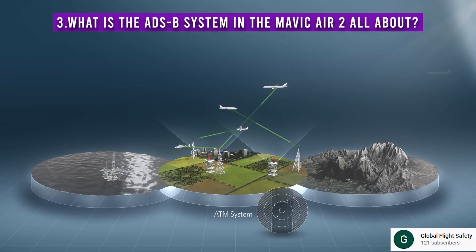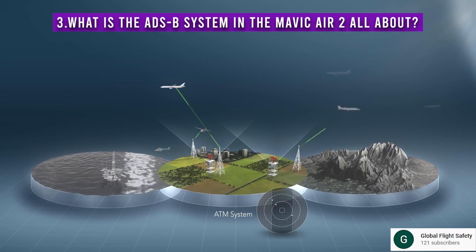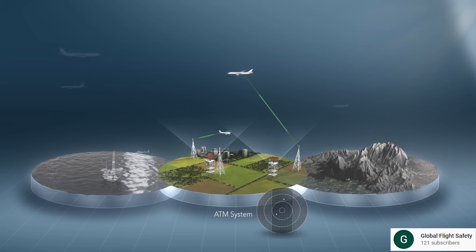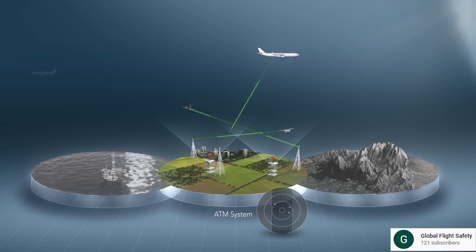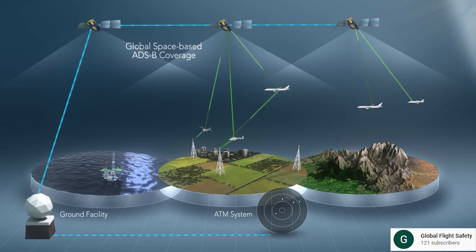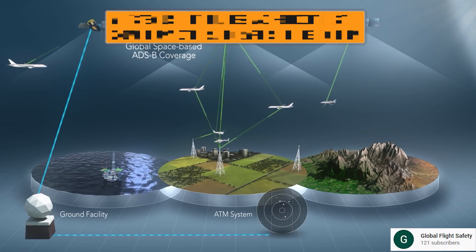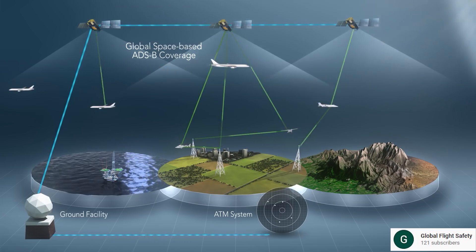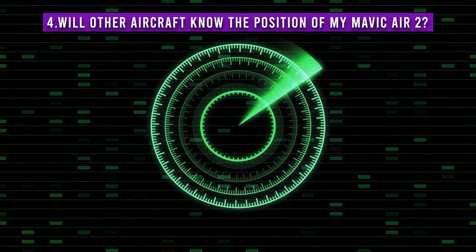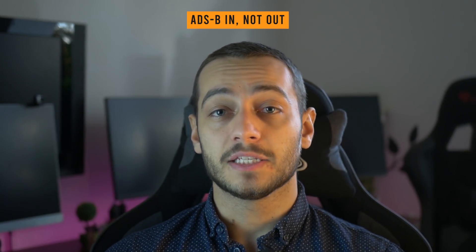What is the ADS-B system in the Mavic Air 2 all about? The ADS-B system is an acronym for Automated Dependent Surveillance Broadcast, which DJI calls AirSense. It is a system used by planes and helicopters to know if any other aircraft is in the vicinity. Will other aircraft know the position of my Mavic Air 2? No. The new system is ADS-B in, not out — so it only receives the signal from other airplanes but doesn't transmit back. Your privacy is still intact.